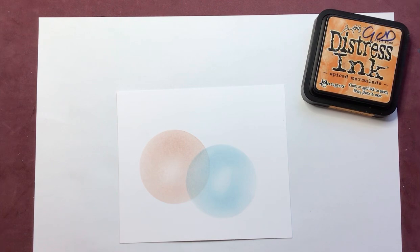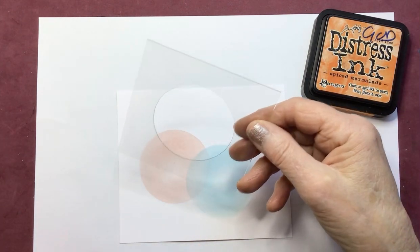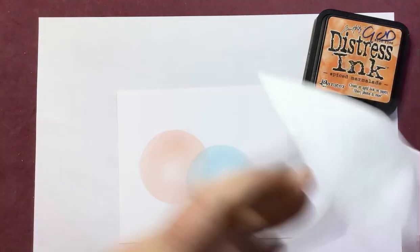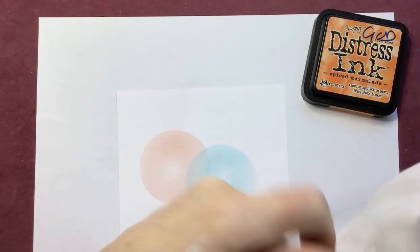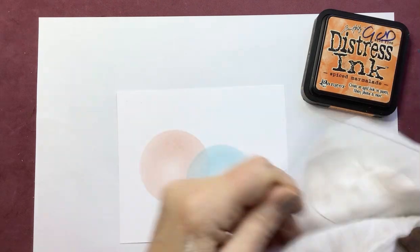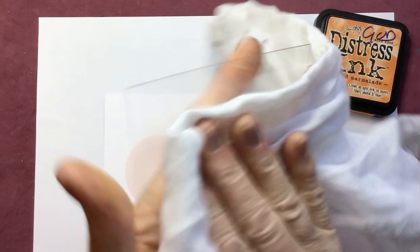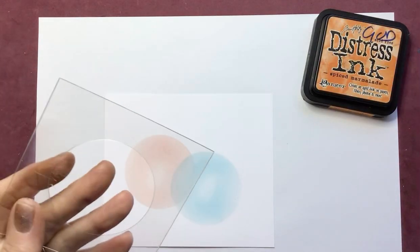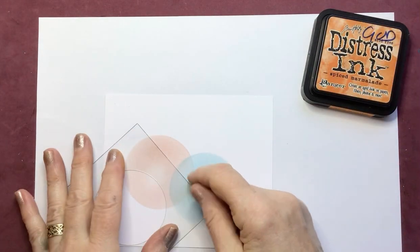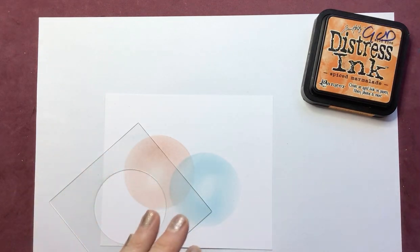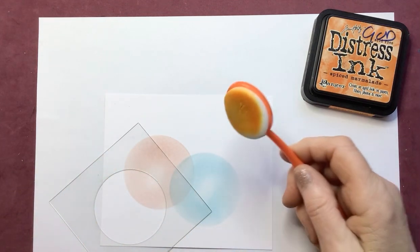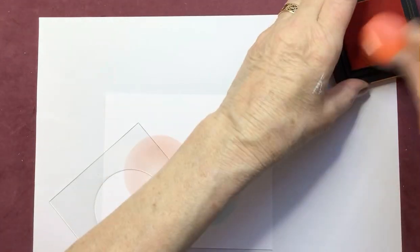You still need this again but clean it off with a cloth, all of the ink from the middle as well because otherwise it would just mark your card. Just a dry cloth would do that and then I'm using the edge of this along with an orange brush for spice marmalade.